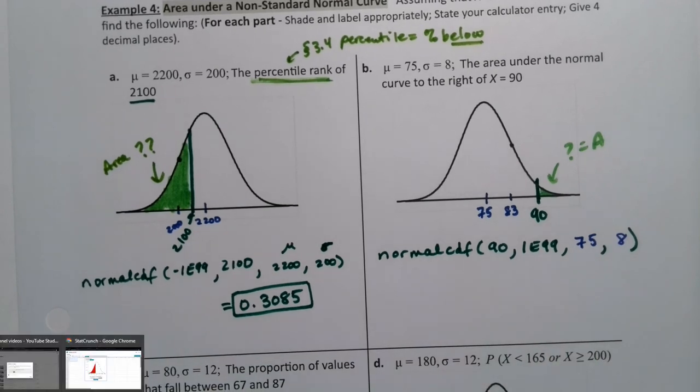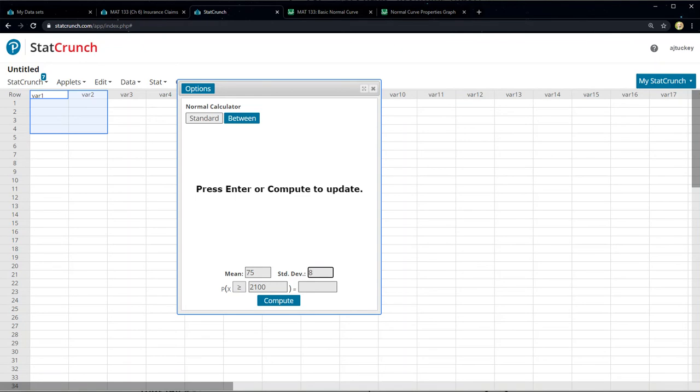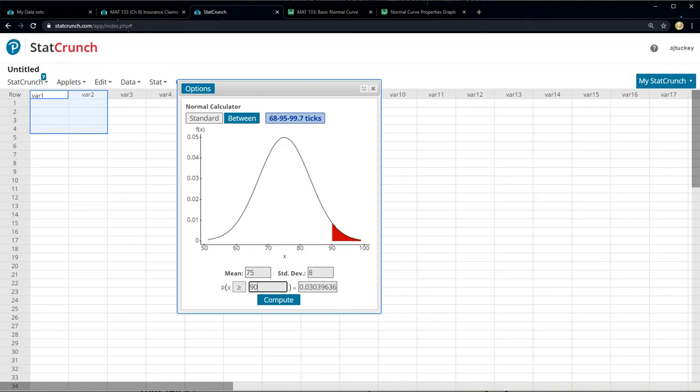So I'll show StatCrunch first this time. So I'm going to change it to a greater than. I'm going to change my mean to 75, my standard deviation to 8, and I'm going to make this greater than or equal to 90. Enter. And I get .0303, which is not entirely surprising. You can see we were not shading very much. 0304 if we round. We were not shading much of that curve. So that would make sense.